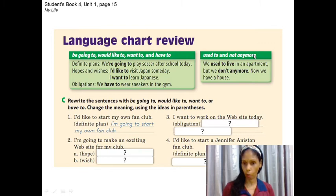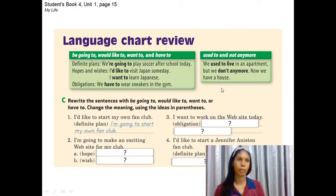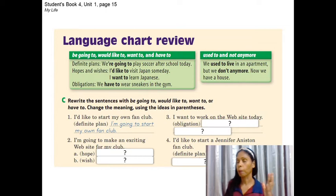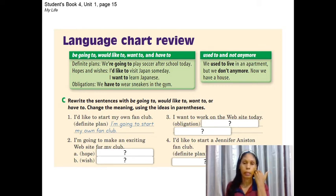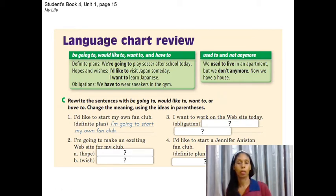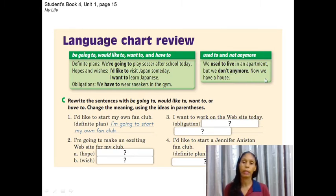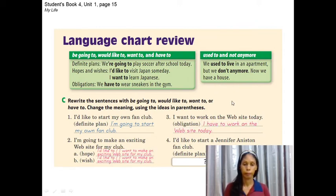Used to and not anymore: 'We used to live in an apartment, but now we don't anymore. Now we have a house.' You use 'used to' to talk about something that happened or was a habit in the past but no longer happens now — the situation has changed. For example: I used to have short hair when I was a child, but now, not anymore. We use 'used to' and 'not anymore' to contrast past and present actions together.